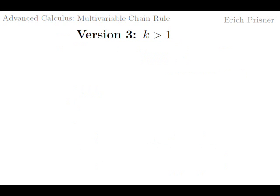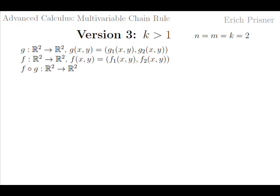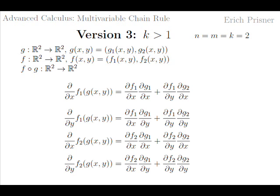If we let f be a vector-valued multivariable function, we get even more equations. For simplicity, let k equals 2 and let f have two components f₁ and f₂. Then the previous two partial derivative formulas hold for both f₁ and f₂, giving us four formulas in total.